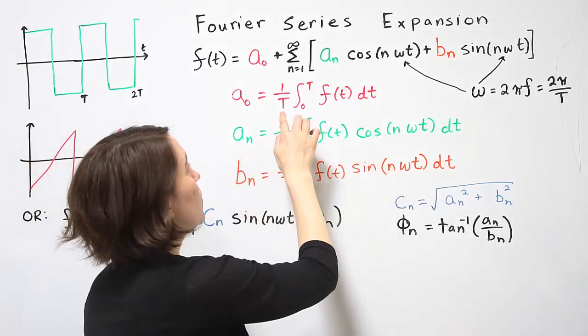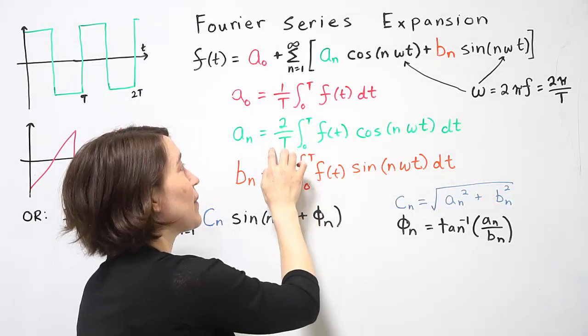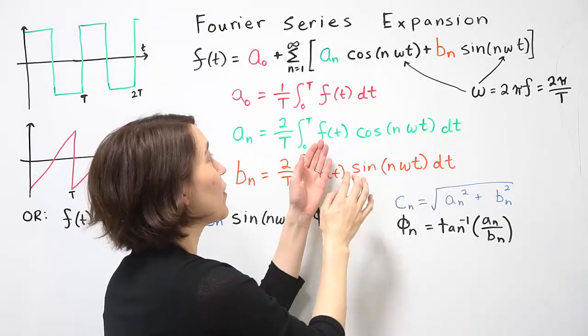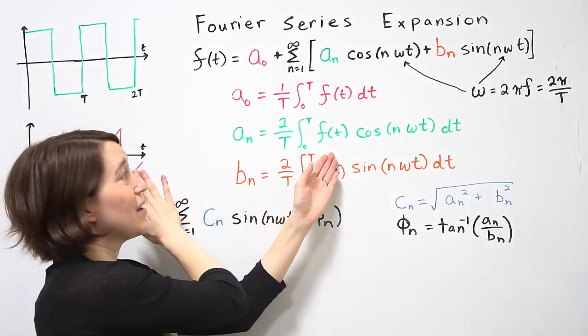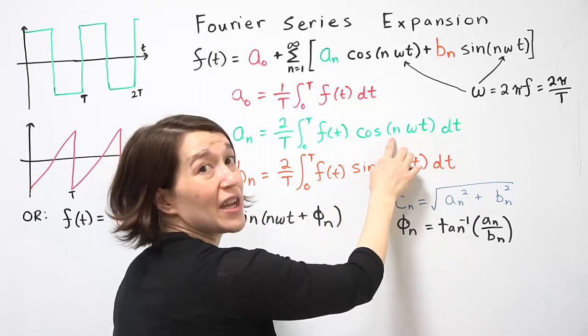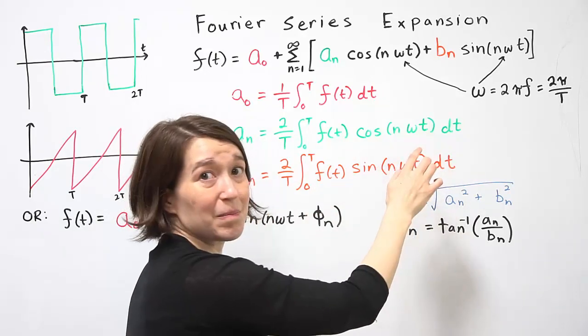So aₙ you would multiply 2 divided by T times the integral from 0 to T of the function, your periodic function here, multiplied by the cosine of whichever n you're looking at, of ωt.